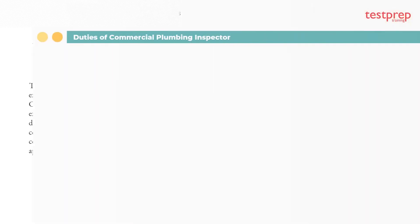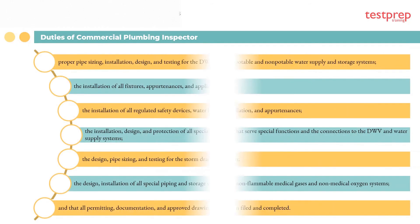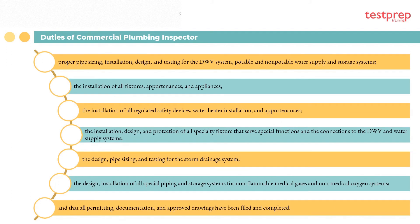Duties of a commercial plumbing inspector: One, proper pipe sizing, installation, design, and testing for the DWV system, potable and non-potable water supply and storage systems. Two, the installation of all fixtures, appurtenances, and appliances. Three, the installation of all regulated safety devices, water heater installation, and appurtenances. Four, the installation, design, and protection of all specialty fixtures that serve special functions and the connections to the DWV and water supply systems.